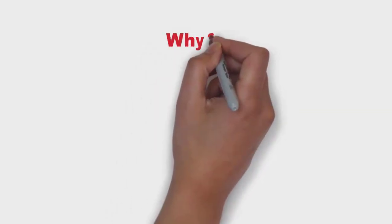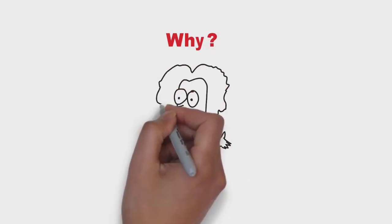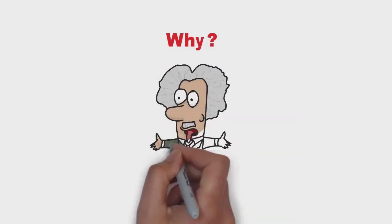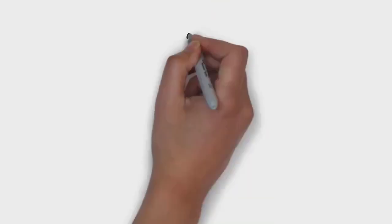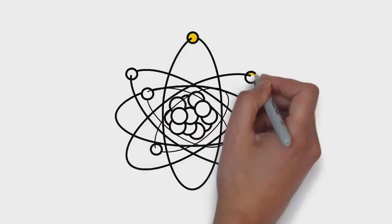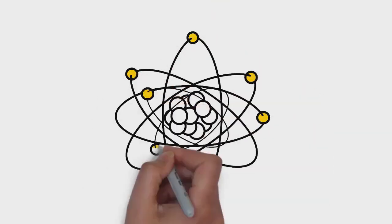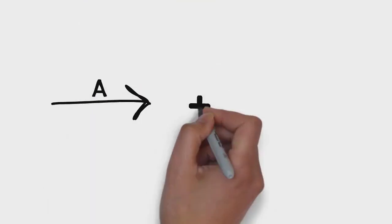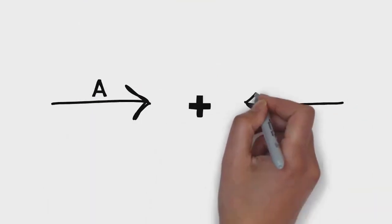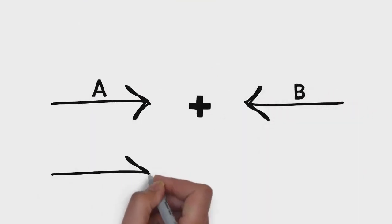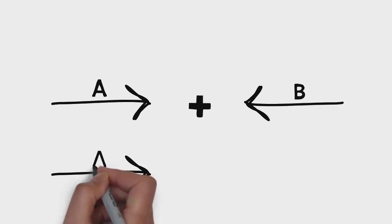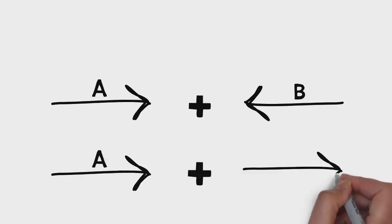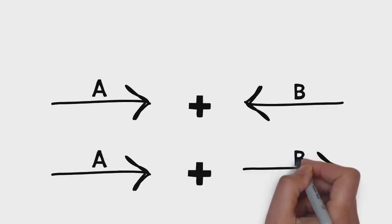So why are vectors so important and why do we study them? Because many quantities used in physics are vectors. The most important thing in vectors is their directions. If you add or subtract vector quantities without taking into account their direction, you will get incorrect results.